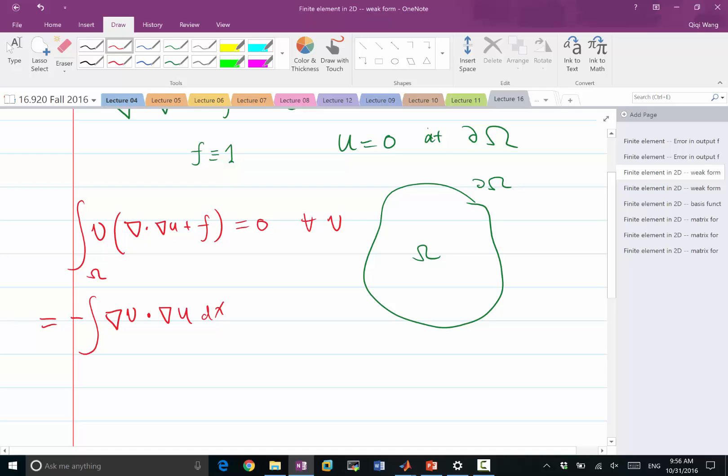But here, because we are having u satisfying the zero boundary condition, our test function v should also satisfy the same zero boundary condition, because v represents a perturbation on u. So the boundary term goes away because v equals 0. The remaining part is simply v times f dx. This has to equal 0.